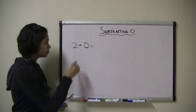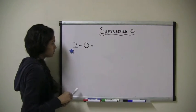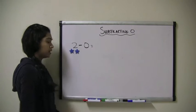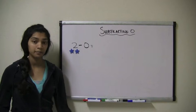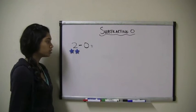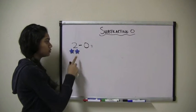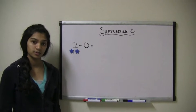I have 2 stars, 1, 2, and I want to take away 0 stars, which means I'm not taking away anything. I still have 1, 2 stars, so 2 minus 0 equals 2.